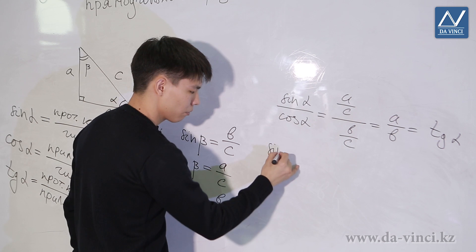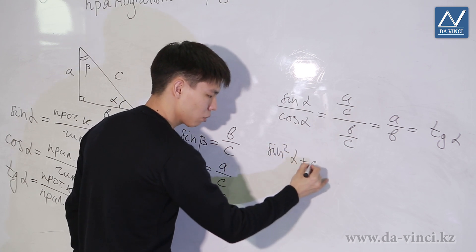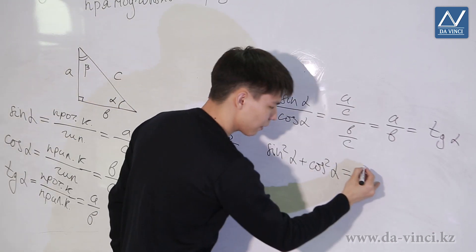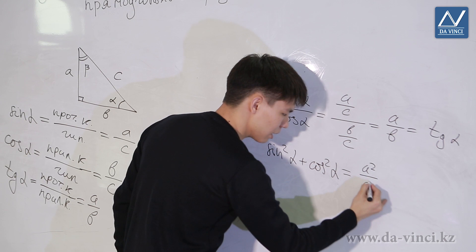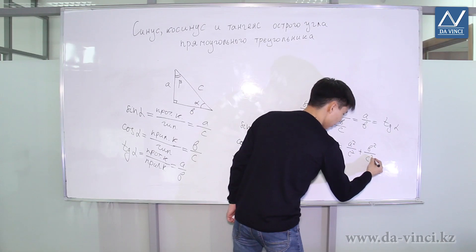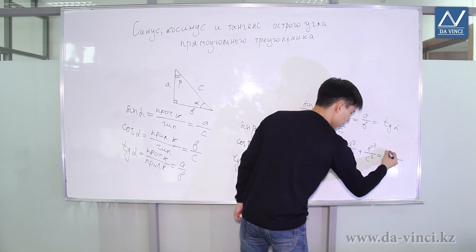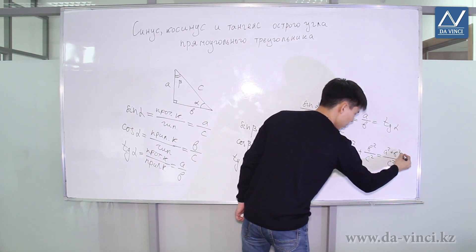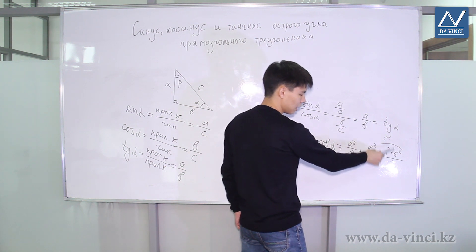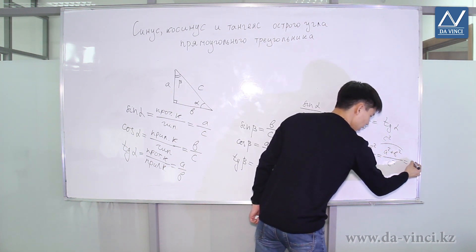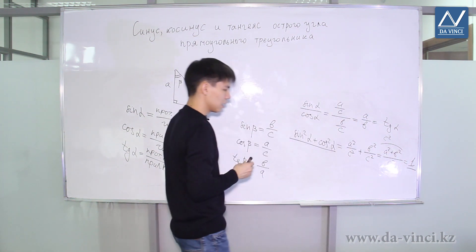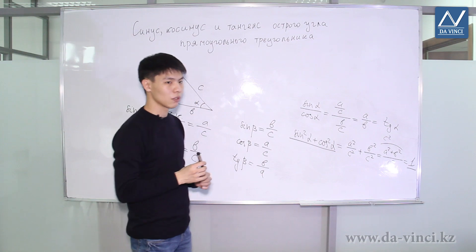We can also prove the following relation: sine squared alpha plus cosine squared alpha. We have sine = A divided by C, squared — so A squared divided by C squared — plus B squared divided by C squared. With common denominator C squared, we get A squared plus B squared. But A squared plus B squared by the Pythagorean theorem is C squared. Thus, C squared divided by C squared is 1. So, sine squared plus cosine squared is equal to 1. This expression is called the basic trigonometric identity.